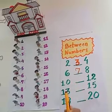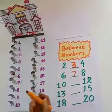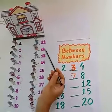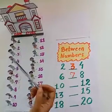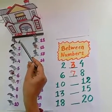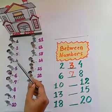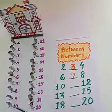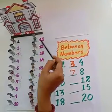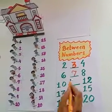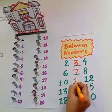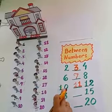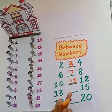Now tell me children, which number child is standing between child number 10 and child number 12? Let's count again: 1, 2, 3, 4, 5, 6, 7, 8, 9, 10 and 11. So child number 11 is standing between child number 10 and 12.